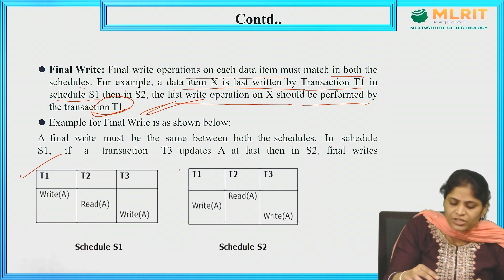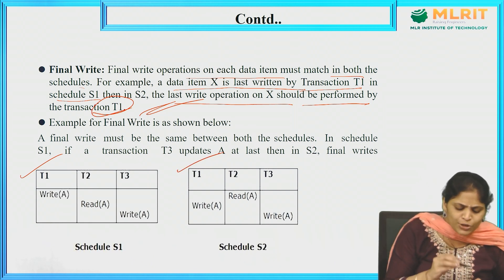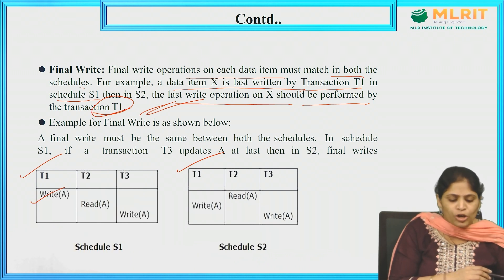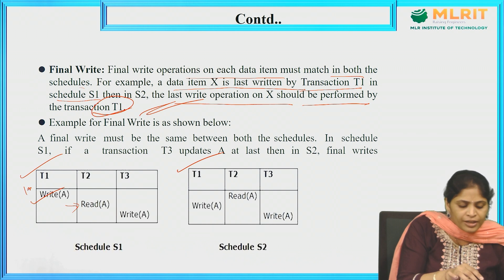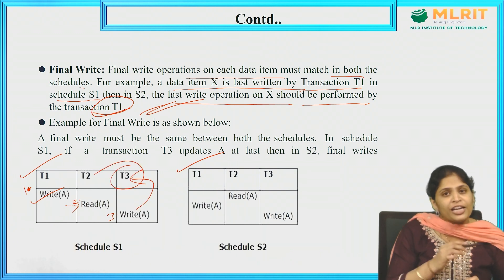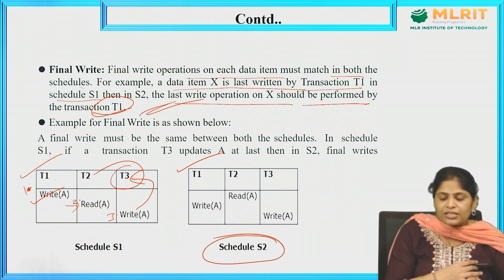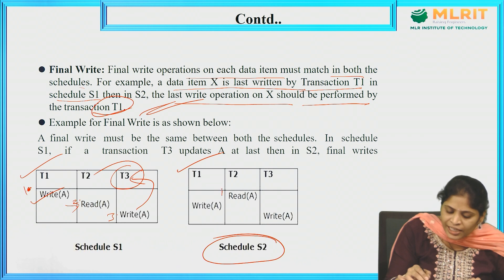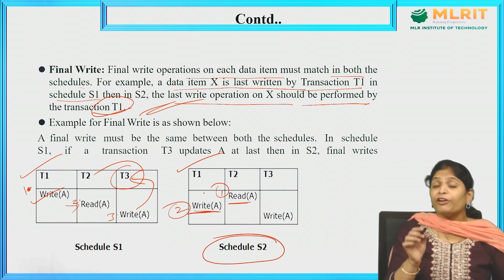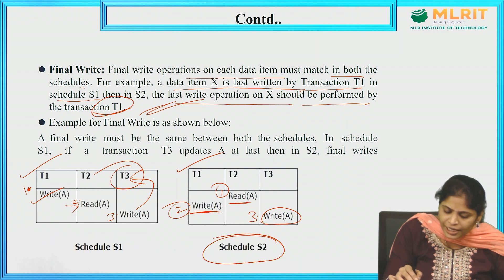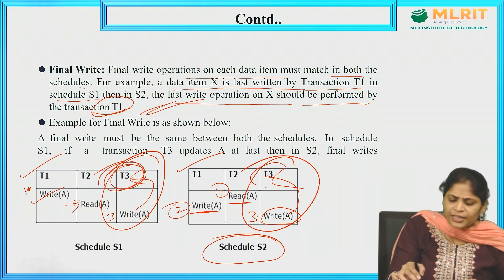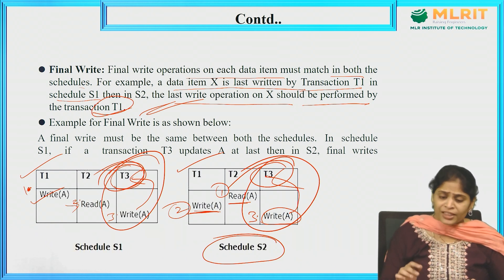Let us consider an example. We have three transactions in each schedule S1 and S2. In schedule S1, T1 does a write operation first, then T2 performs an operation, and the final write is done by T3. In schedule S2, T2 performs a read operation first, then T1 does a write operation, and finally T3 performs the write operation. Both schedules have the final write performed by T3 — so the final write condition is satisfied.